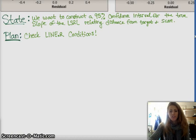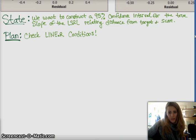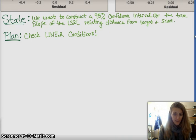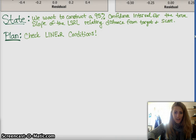State: we want to construct a 95% confidence interval for the true slope of the least squares regression line relating distance from target and score. Number two, check the conditions. Which is the LINER, or the linear, where A is just and.